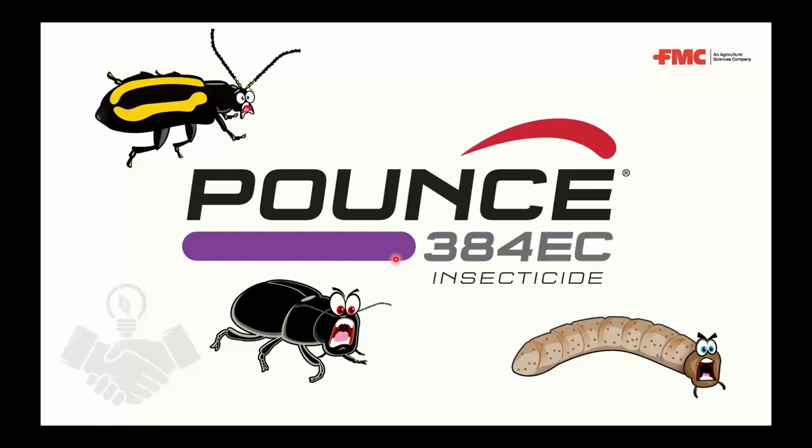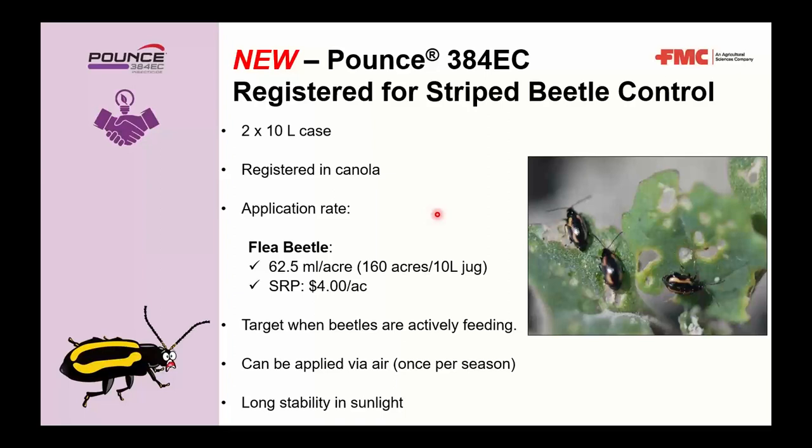Shifting to product specifics: Pounce 340 384 EC has a new registration for both striped and crucifer flea beetles — one of the only insecticides with both on its label. The active ingredient is permethrin, a Group 3 highly concentrated synthetic pyrethroid. Best results are when the product contacts the pest directly, though it does have some ingestion activity. Good water volume of 10 gallons per acre is needed.